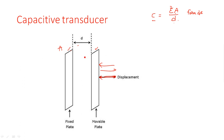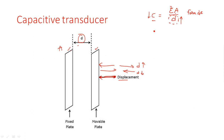If the mobile plate moves away, the distance d increases; if it moves closer, d decreases. According to the formula C = εA/d, distance and capacitance are inversely proportional — if distance increases, capacitance decreases, and if distance decreases, capacitance increases. The displacement of one plate of the capacitor causes change in capacitance, and the movement of the plate is measured with respect to the capacitance value. This is how the capacitance transducer works.